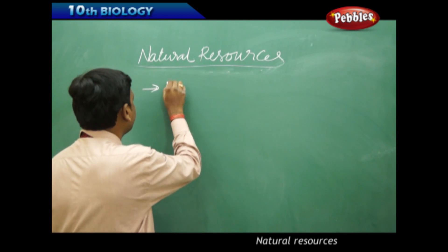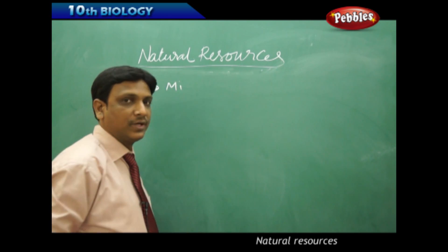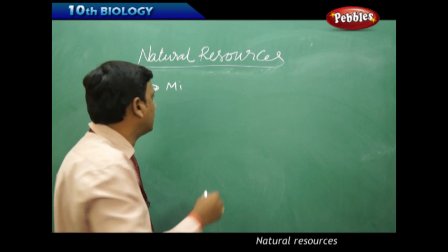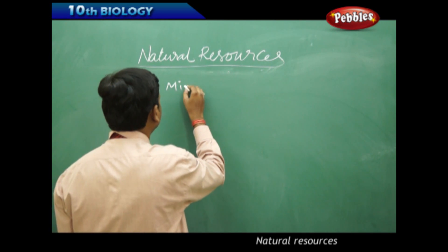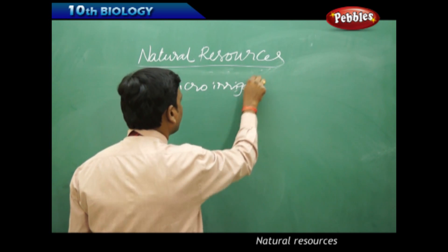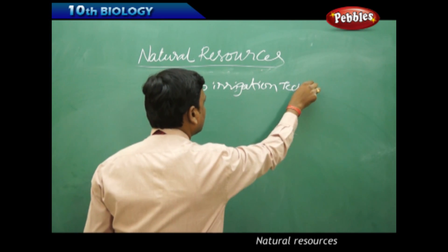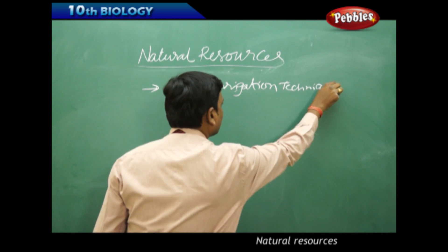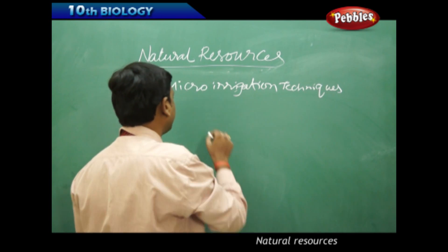Based on the first thing, farmers can form communities, they help each other, they can form certain techniques. Micro irrigation techniques help the farmers to a certain extent.